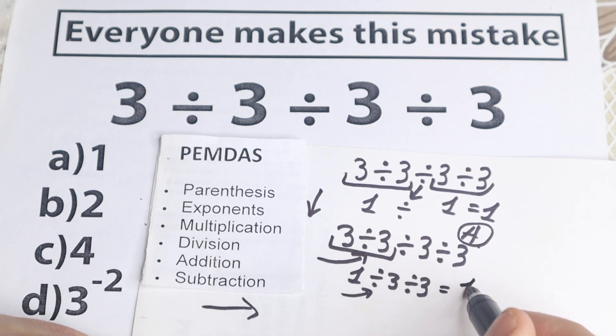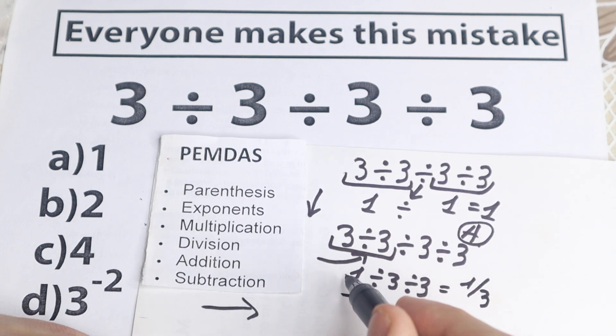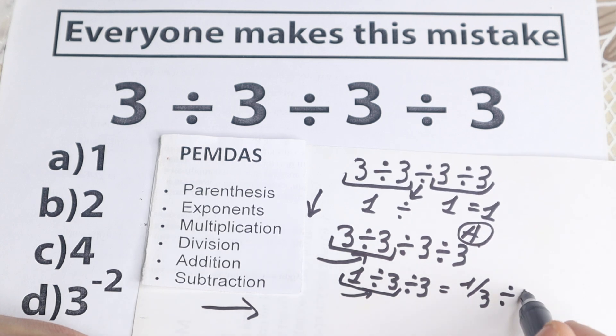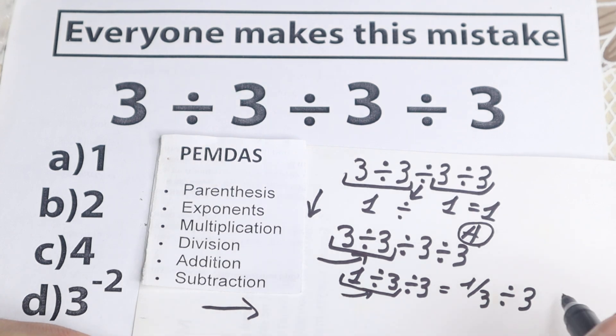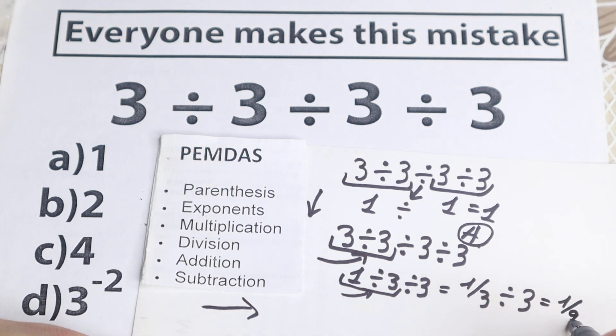And if we divide, we have like, I write it as a fraction way. 1 third, this is 1 third, and dividing by 3, the last step, 1 third dividing by 3, this is equal to 1 over 9, 1 over 9, this is our answer.